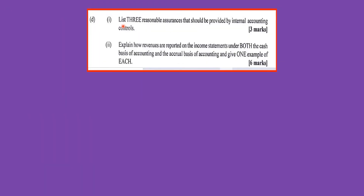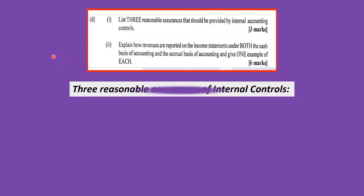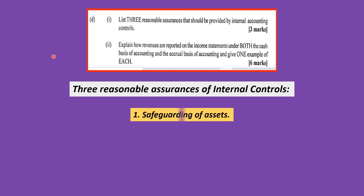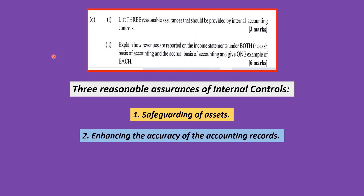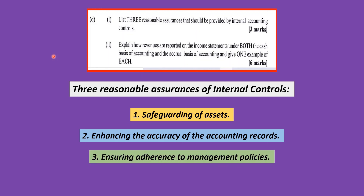Part B: List three reasonable assurances that should be provided by internal company controls. One: safeguarding of assets. Two: enhancing the accuracy of the accounting records. Three: ensuring adherence to management policies.